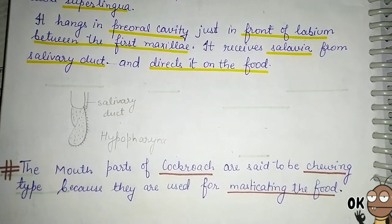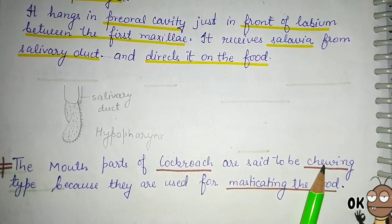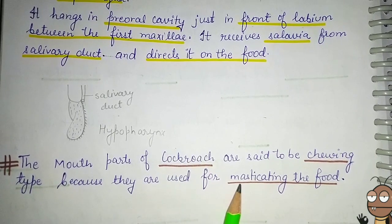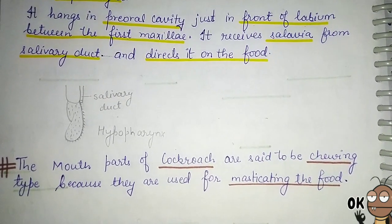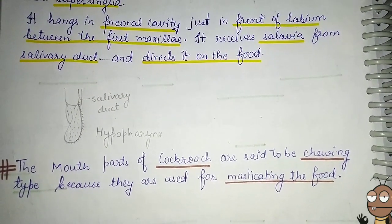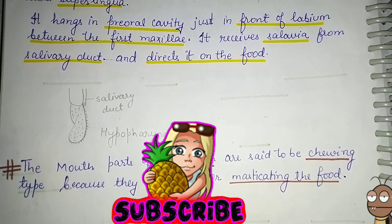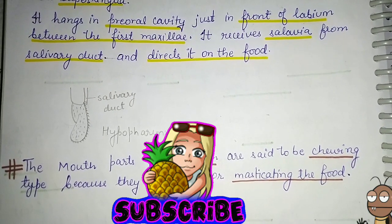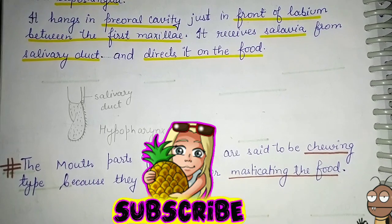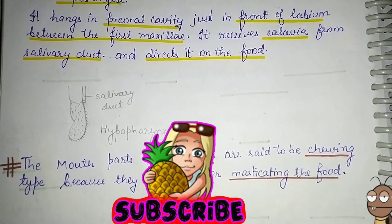The mouthparts of cockroaches are said to be of the chewing type because they are used for masticating the food. This is all about the mouthparts of cockroaches, which include five different kinds of appendages: the labrum (upper lip), mandible, first maxilla, labium (second maxilla or lower lip), and the hypopharynx. I hope you liked this video — please subscribe, like, share, and comment. Thank you.